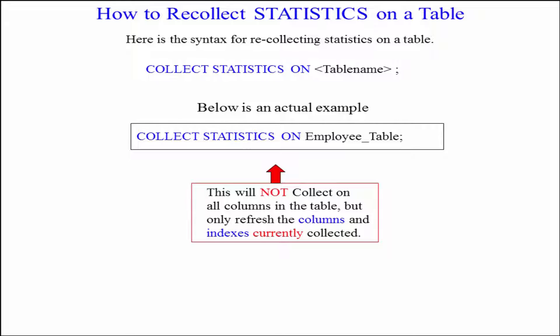That's what I want you to see here. You don't collect statistics one time and never worry about it again. If you load more data, if data changes by more than 10% is the rule of thumb, you want to collect statistics again. But you just need to say COLLECT STATISTICS ON table name and it's going to redo what it's done in the past.